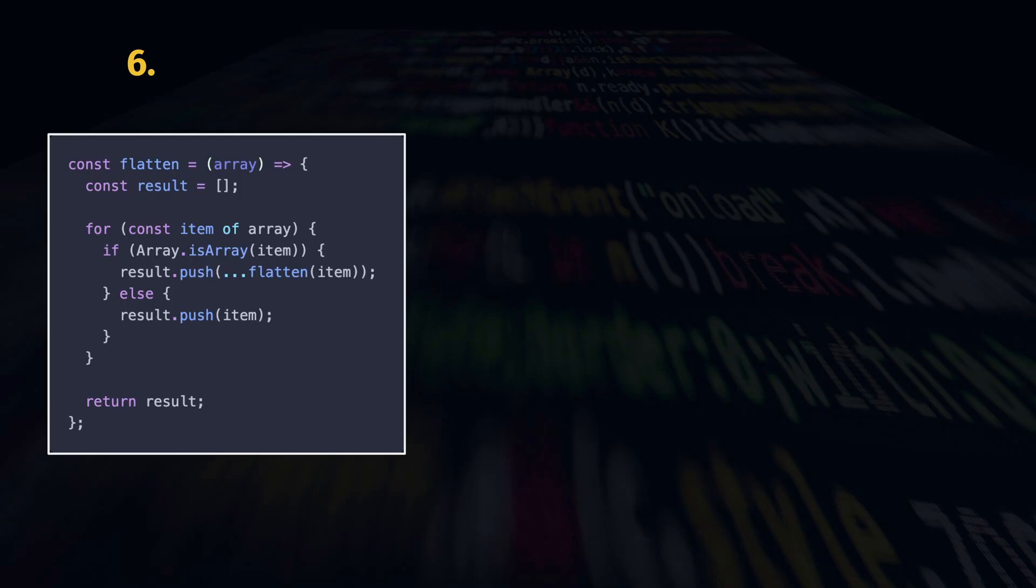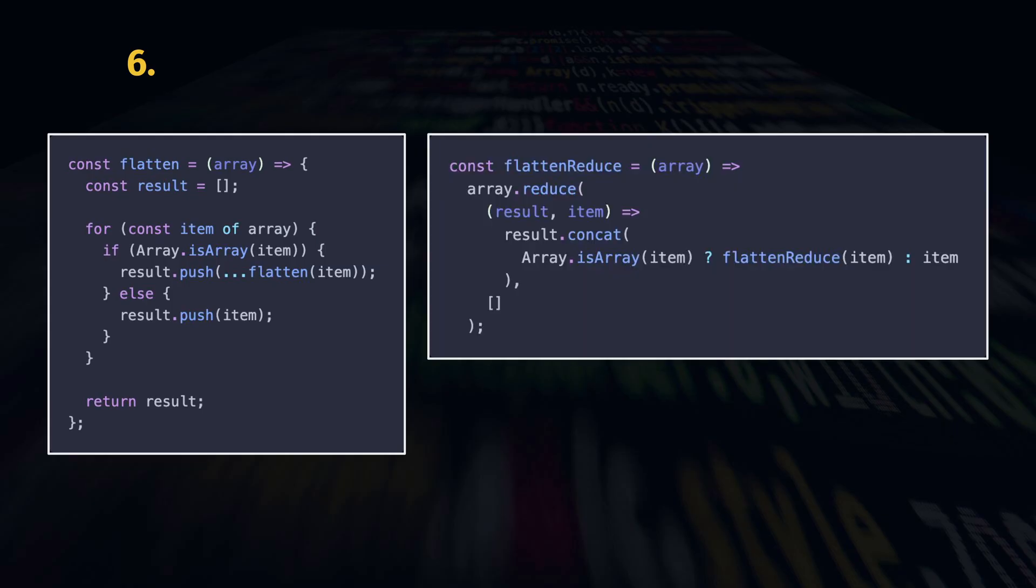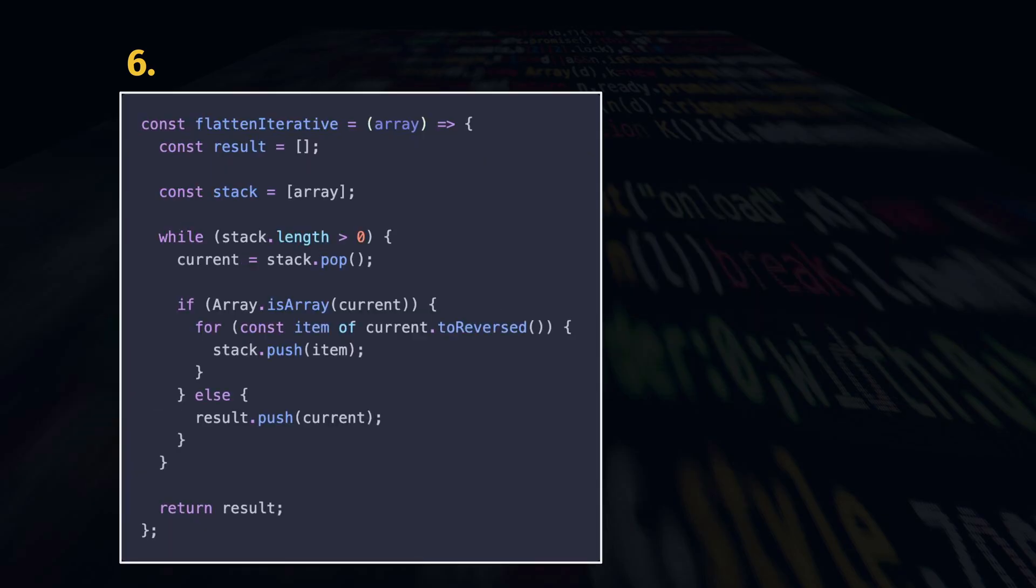The recursive solution is simple: iterate the array. If the element is an array, recursively obtain the flattened array. If not, add the element directly to the result. Notice how this can be easily converted to a function using reduce. If you are challenged to the iterative solution without recursion, this is also possible, either with a queue or a stack.